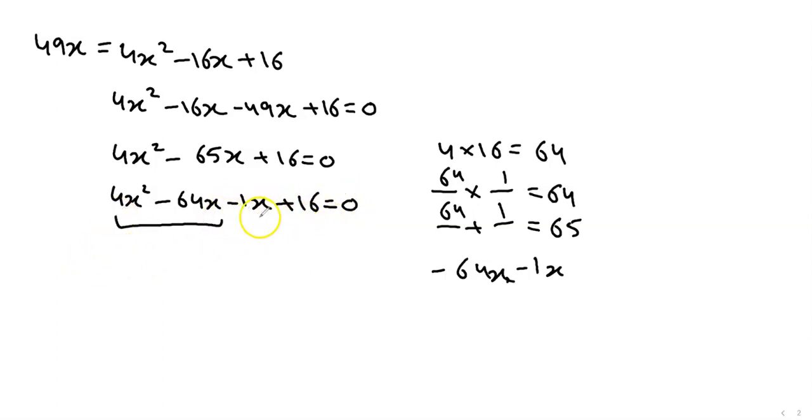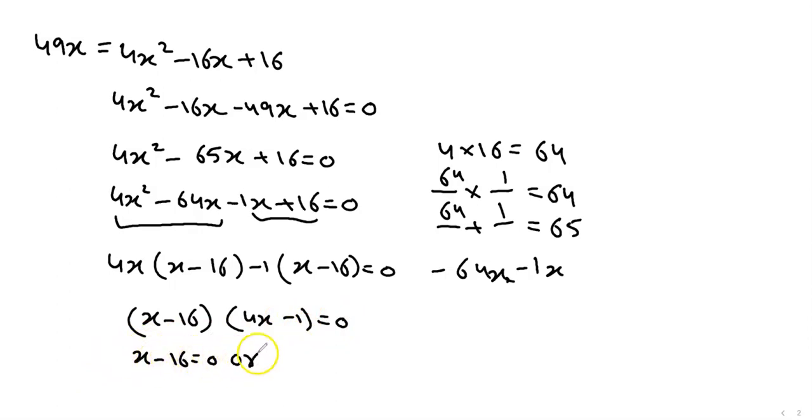Aage do do numbers common lenge. To four x common, ander bachega x minus, bolo bolo, four sixteen ja. Sixty four. Minus one. Ab ye minus ki wajah se ander wali sign change ho jayegi. To ye aajayega x minus sixteen. To first bracket mein x minus sixteen, ander second bracket mein yahan se aayega four x, ander wali sign minus one, equal to zero. Ab ye zero dono ko de denge: x minus sixteen equal to zero, aur four x minus one equal to zero.